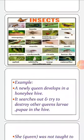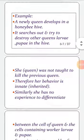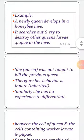For example, a newly developed queen in a honeybee hive searches out and tries to destroy other queens' immature larvae and pupae in the hive. The queen was not taught to kill the previous queen. Therefore, her behaviour is inherited or innate.